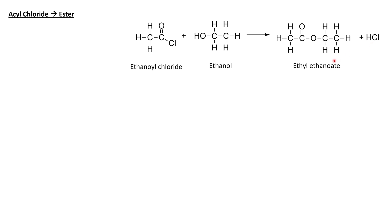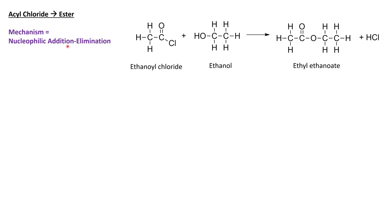The naming of the ester is quite straightforward. The first part of the name, 'ethyl', stems from the group on this side of the carboxylate. The 'ethanoate' group is this side. You can also think about naming esters in terms of the alcohol and acyl chloride used: 'ethyl' because we used ethanol, and 'ethanoate' because we used ethanoyl chloride. The mechanism for this is again nucleophilic addition elimination, and all you need to do is add an alcohol to your acyl chloride — this will react at room temperature.